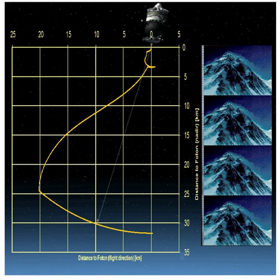Fotino released as planned during a swing of the tethered system through the vertical as seen from Photon. The tether properties, deployment dynamics and tether deployer system performance could be evaluated. The tether deployer performed nominally.